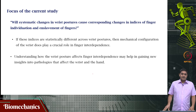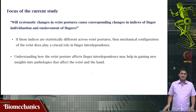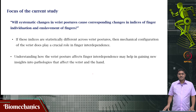We will stop here for this video. In this video, we looked at the background for the study on kinematic enslavement — how wrist posture affects the indices of finger interaction in kinematics. These indices are the individuation index, stationarity index, and the enslavement matrix. With this, we come to the end of this video. Thank you very much for your attention.